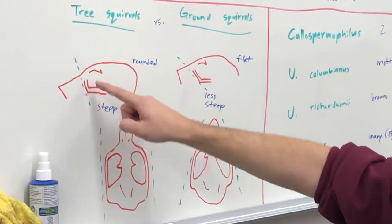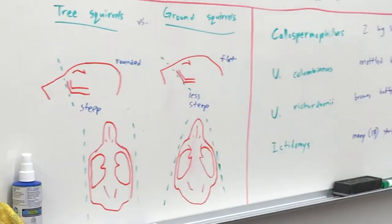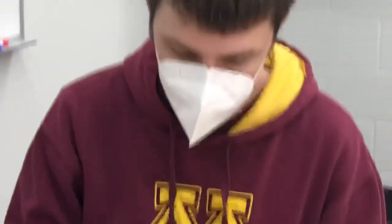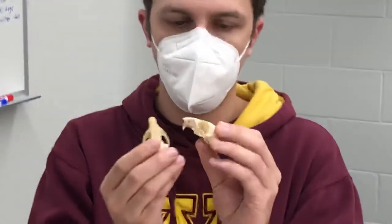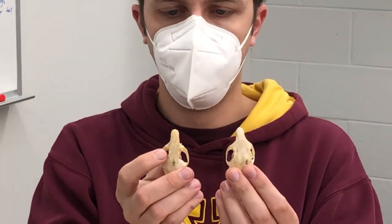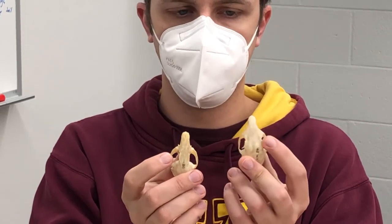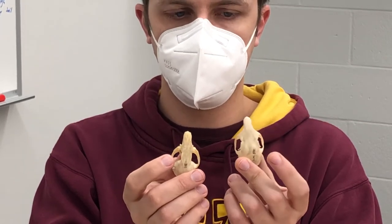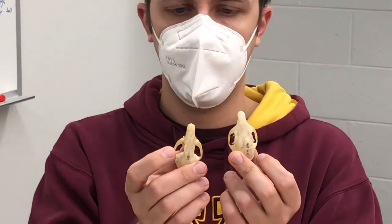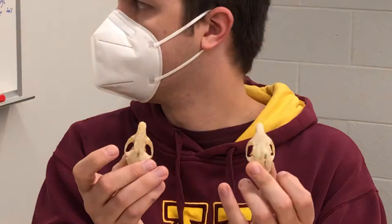Next, the zygomatic plate is steeper for tree squirrels than for ground squirrels. If you look at these two top down, you can see in the tree squirrel that the plate is kind of sticking out underneath more than in the ground squirrel, where you see less from this top-down view. That is because the plate is steeper here than it is here.